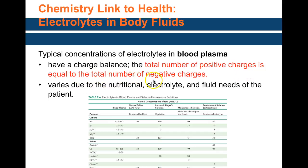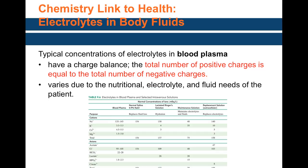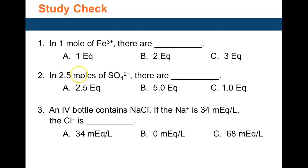The key thing to note is that the total number of positive charges always equals the total number of negative charges. For example, if you add up all the positive charges in normal saline it comes out to 154, and the total for negative ions is also 154. Regardless of the type of IV solution, the total positive charges must equal the total negative charges.